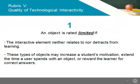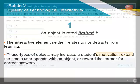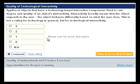An object is limited, and deserves a 1 rating, if the technological interactivity in the object neither relates to nor detracts from student learning. These types of objects, such as ones where the user scores points or moves through levels, may increase a student's motivation, extend the time a user spends with an object, or reward the learner for correct answers.